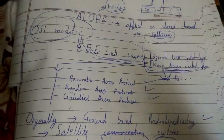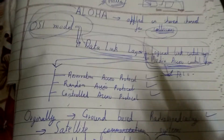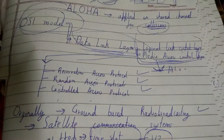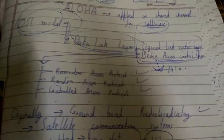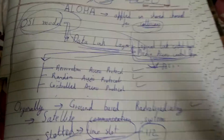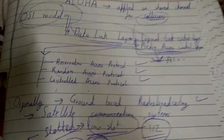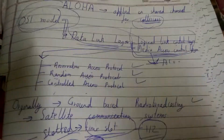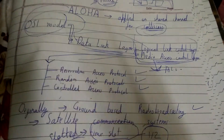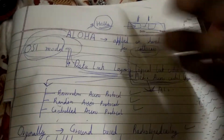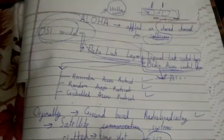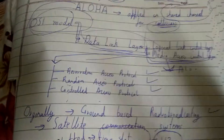ALOHA was originally designed for ground-based radio broadcasting, but it was so effective that it was further adapted for satellite communication systems. Nowadays it is used almost everywhere — including television broadcasting and internet video streaming — wherever shared channels exist, because it is very effective and efficient.